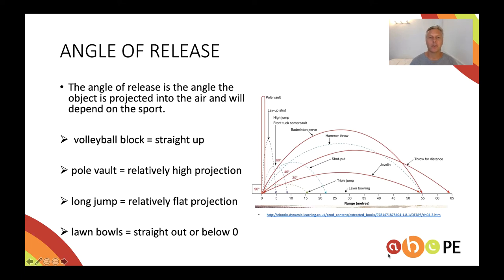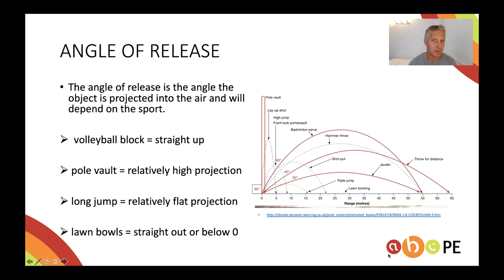A pole vaulter is obviously wanting to project high into the air, so their angle will be quite high — perhaps even close to 90 degrees. Whereas a lawn bowls player is trying to roll the ball on the ground, so their angle is going to be very different and closer to zero, maybe even negative.